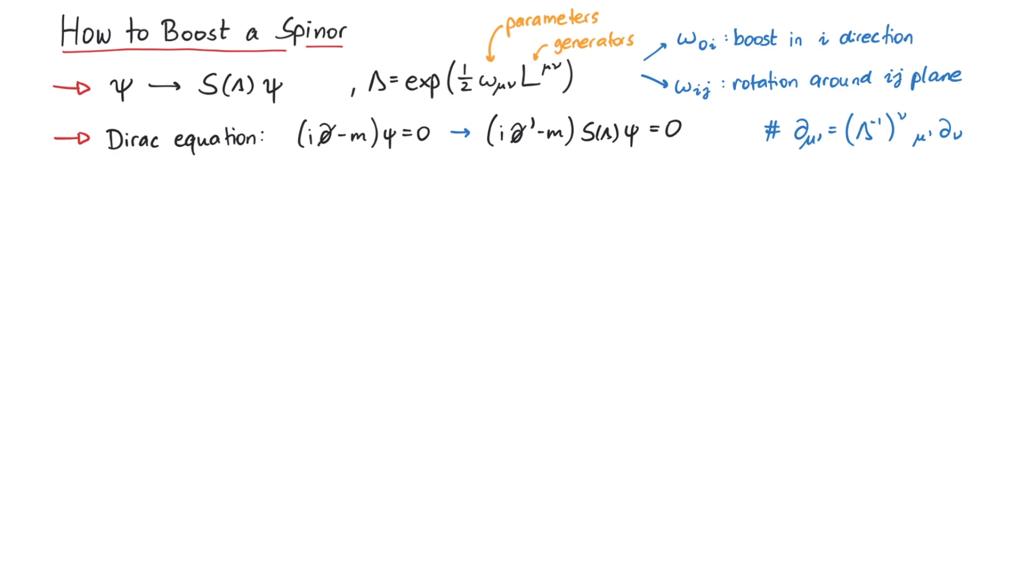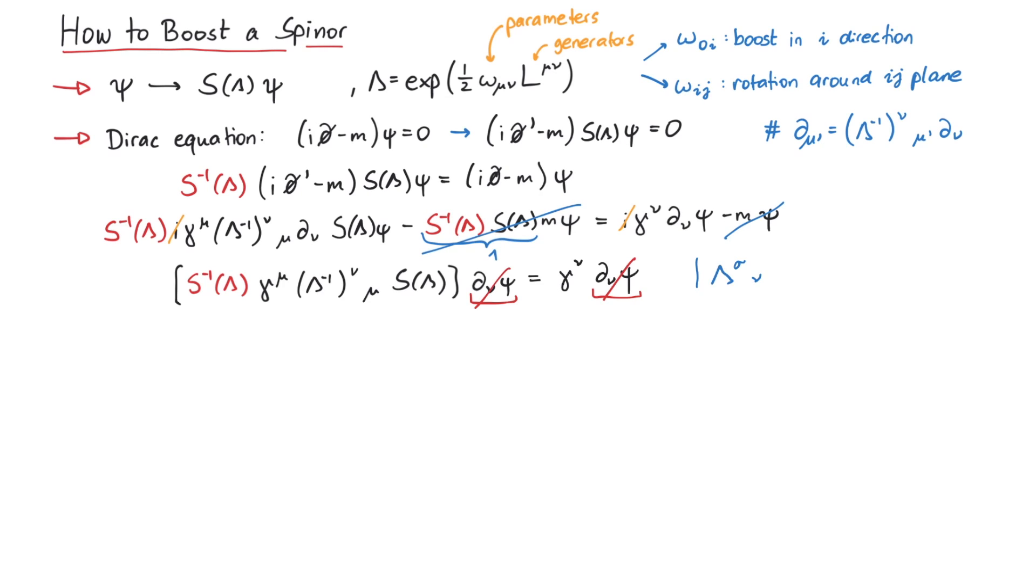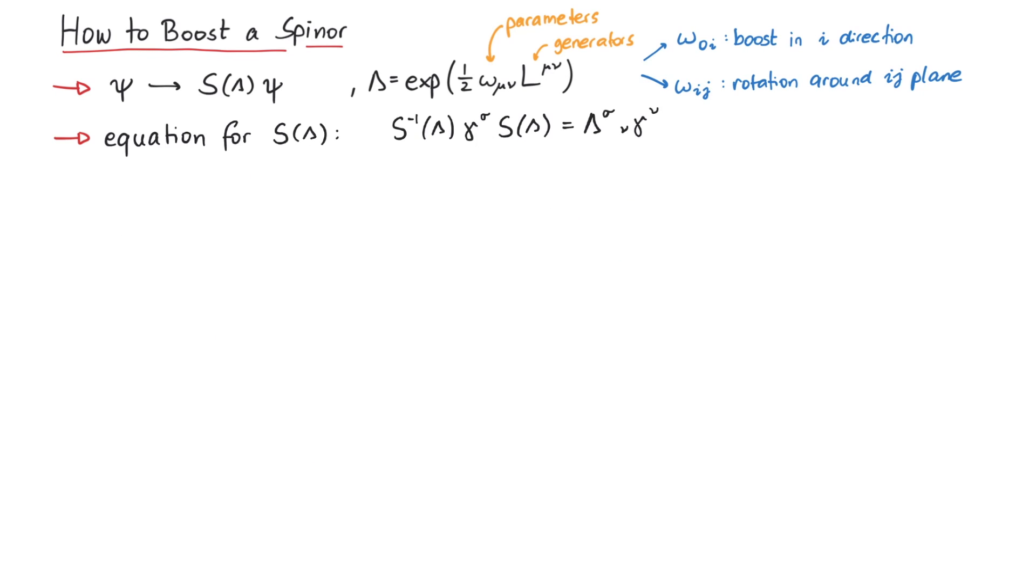We can now set those two Dirac equations equal. By multiplying with the inverse of S from the left, and also a Lorentz transformation matrix, we get this equation here. This will help us calculate S. Note that lambda explicitly takes part in this equation, so for every different Lorentz transformation, we get a different S.